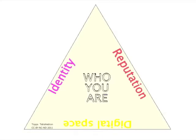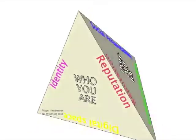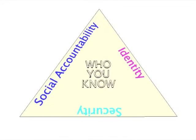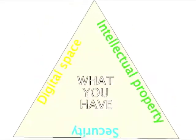Digital professionalism can be broken down using this simple framework. There are four main elements: who you are, what you do, who you know, and what you have.